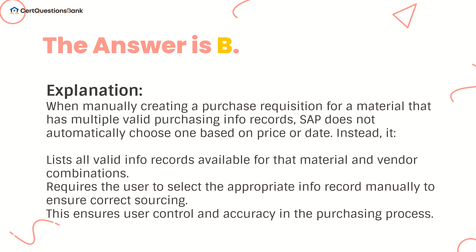When manually creating a purchase requisition for a material that has multiple valid purchasing info records, SAP does not automatically choose one based on price or date. Instead, it lists all valid info records available for that material and vendor combinations, and requires the user to select the appropriate info record manually to ensure correct sourcing. This ensures user control and accuracy in the purchasing process.